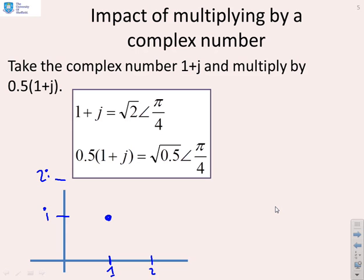The current argument is pi by 4. So there's my original complex number there, and I want to know what's the impact of multiplying by this other complex number.